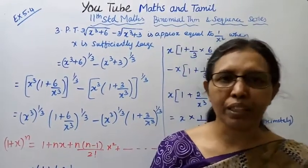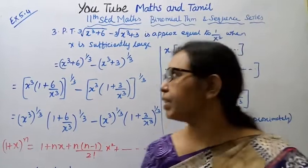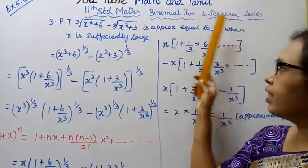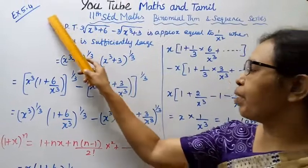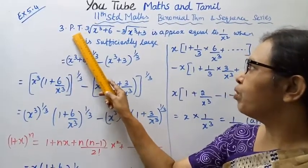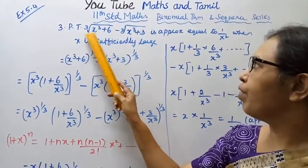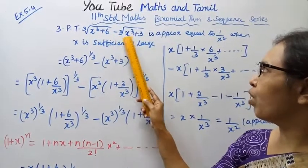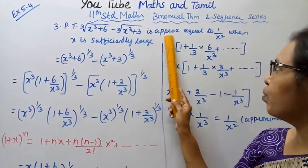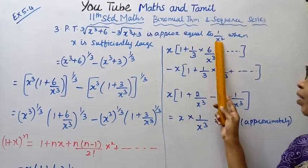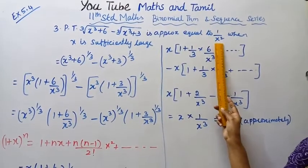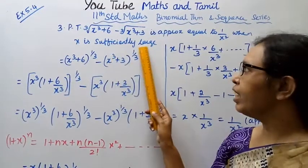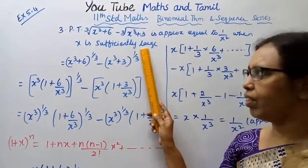Hello students, welcome to Max and Tamil channel. This is the binomial theorem in sequence and series, exercise 5.4, the third sum. Prove that cube root of x³ plus 6 minus cube root of x³ plus 3 is approximately equal to 1 by x², where x is sufficiently large.